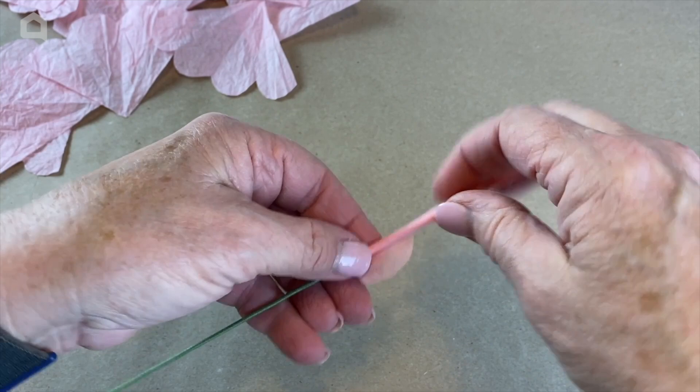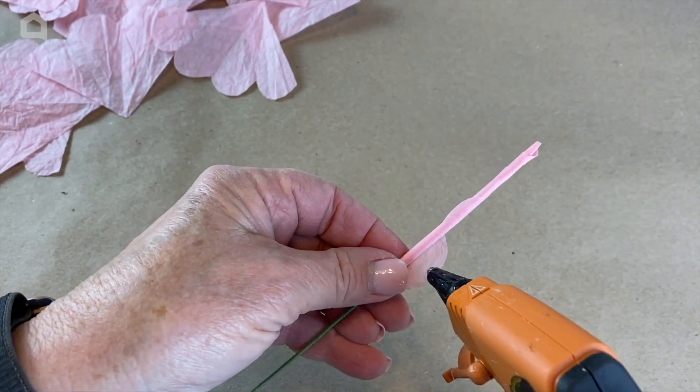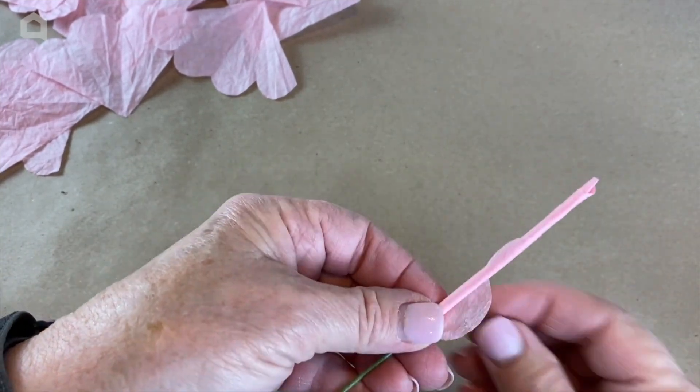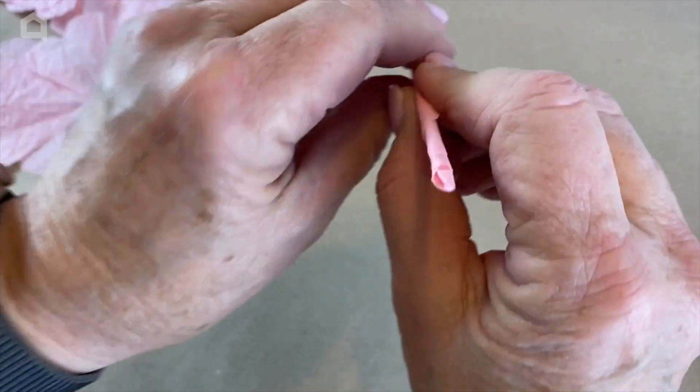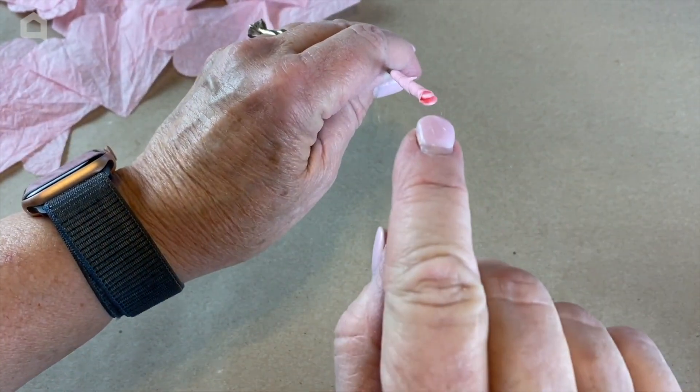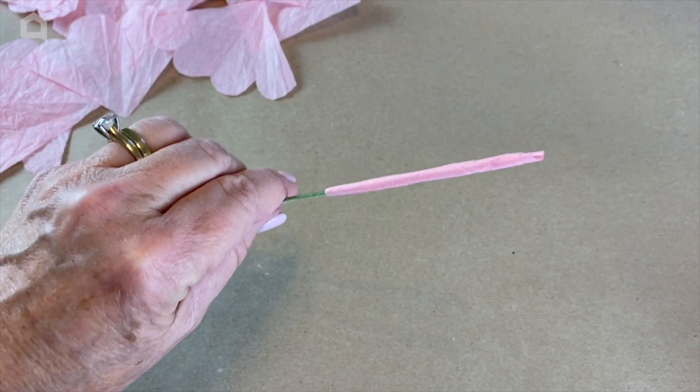Just roll, roll, roll. When you get to here, you're just going to put a little bit of glue right there. And again, using low temp, shouldn't burn you at all. And that is going to be the center of your rose right there, just like that.